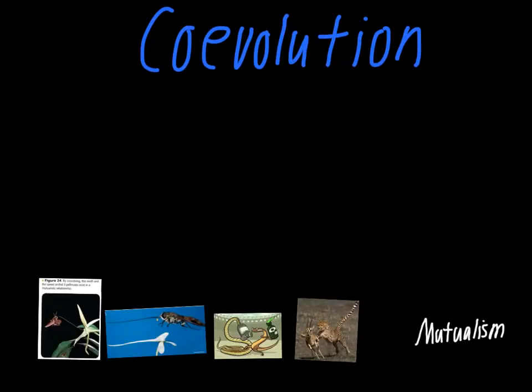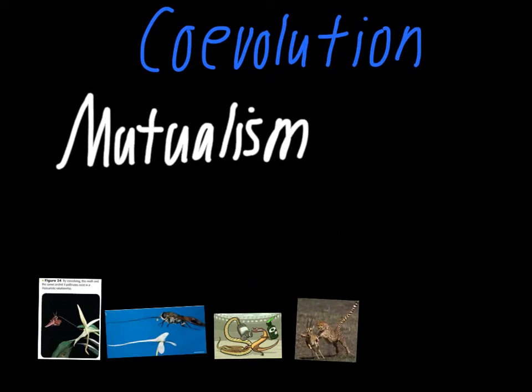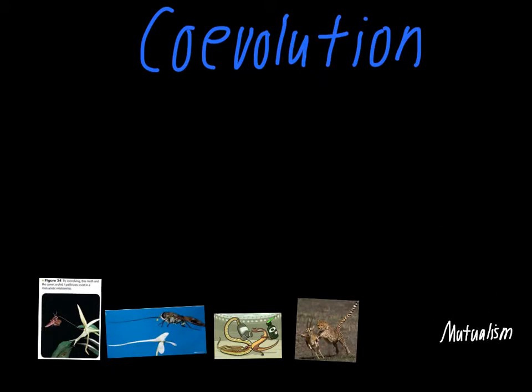The next topic is co-evolution, which happens between species that live closely together and commonly interact. This connects to the term mutualism from environmental science — where both species benefit from an interaction. Mutualism is one particular type of co-evolution, but it's not the only kind. It's just one example.